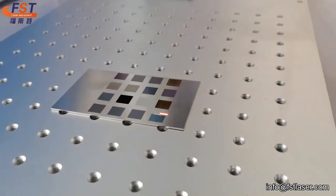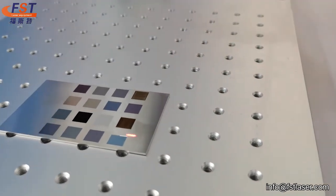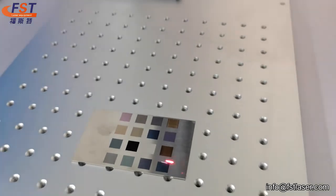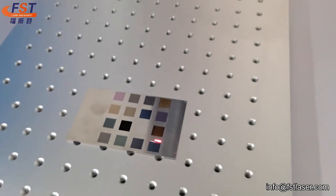You can see clearly it marks all the color. It means they can mark all kinds of color on stainless steel for a mobile marking machine.